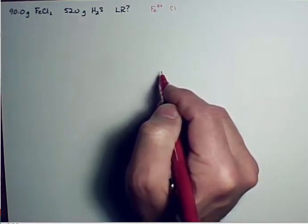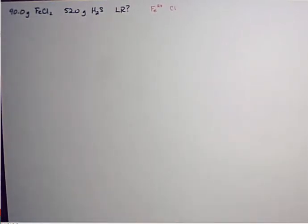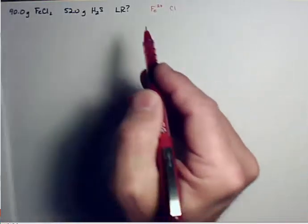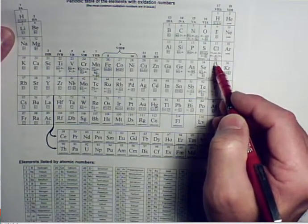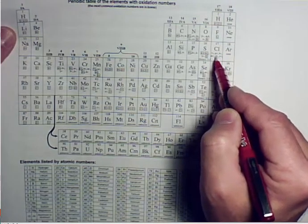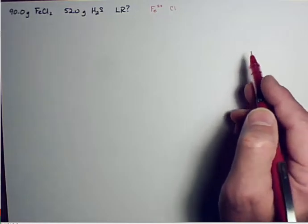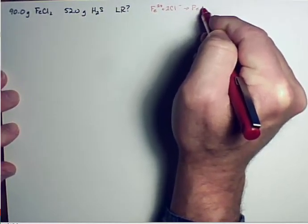Chloride is in column 7A of the periodic table, and almost all of those are going to be a 1-negative charge. You can also look on the periodic table with oxidation numbers and see that chloride has a bunch of oxidation numbers. But since iron is a plus charge, the chlorine has got to be negative — otherwise you'll never get a neutral compound. So the only chlorine oxidation number that works is the 1-negative. That's how you get FeCl₂ to balance out charge-wise.